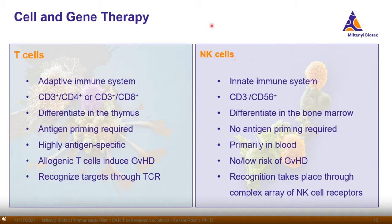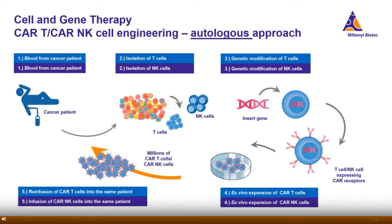Both cell types — T cells as well as NK cells — can be used for cell and gene therapy. T cells belong to the adaptive immune system, whereas NK cells belong to the innate immune system. The major difference is that T cells are activated by antigen priming, whereas for NK cells no antigen priming is required. T cells recognize their targets through the T cell receptor, whereas NK cells recognize targets through a complex array of NK cell receptors.